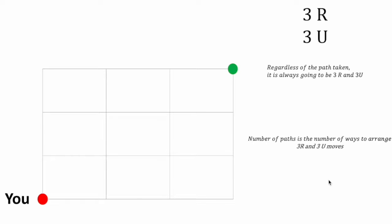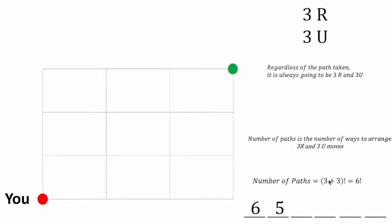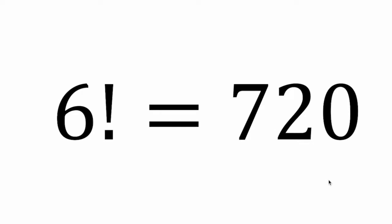This looks promising. So the number of paths is therefore the number of ways to arrange three right and three up moves. Hence, three plus three factorial — six factorial. And why six factorial? Well, to arrange six moves or six objects or six options, we first have six options, we choose one, then we have five, then four, then three, then two, then one. Hence the number of paths is the product of all the options at each step: six times five times four times three times two times one — six factorial, which equals 720.